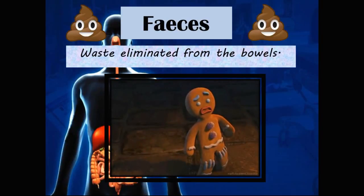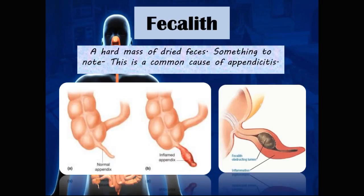Feces are waste eliminated from the bowels. A fecalith is a hard mass of dried feces, and it is a common cause of appendicitis. A small fecalith can obstruct the lumen of the appendix, causing inflammation — which is why many patients develop appendicitis. This can be seen in schematic representations comparing a normal appendix to an inflamed one.